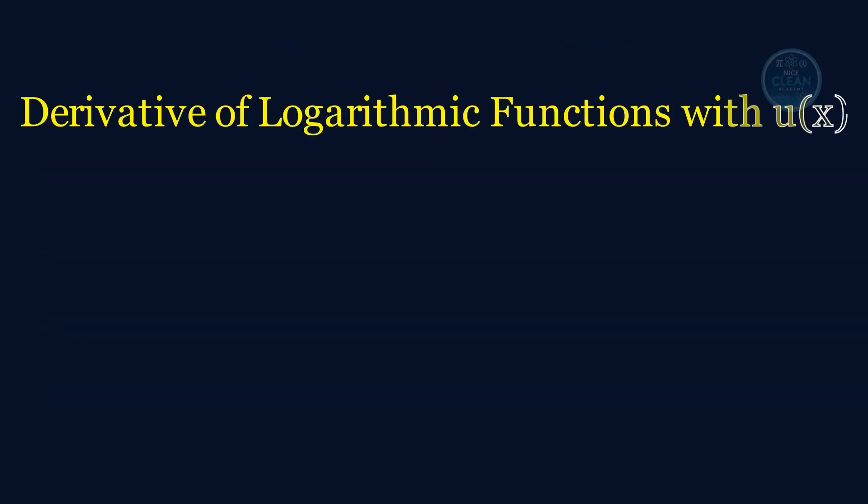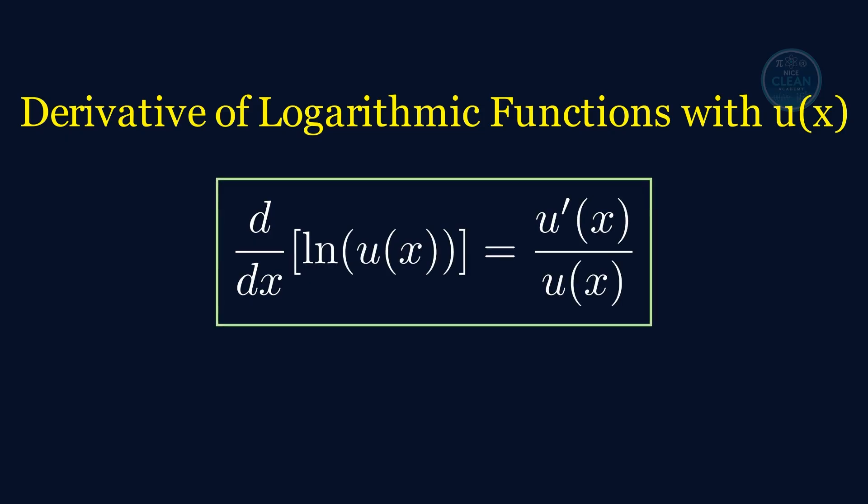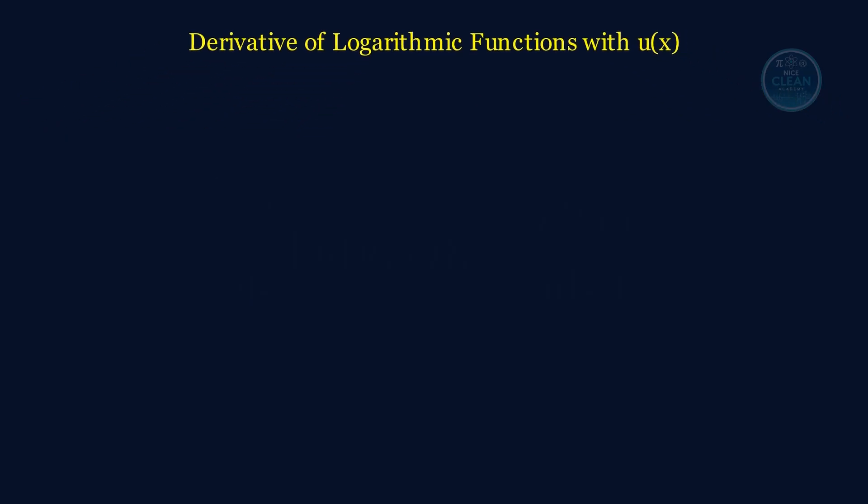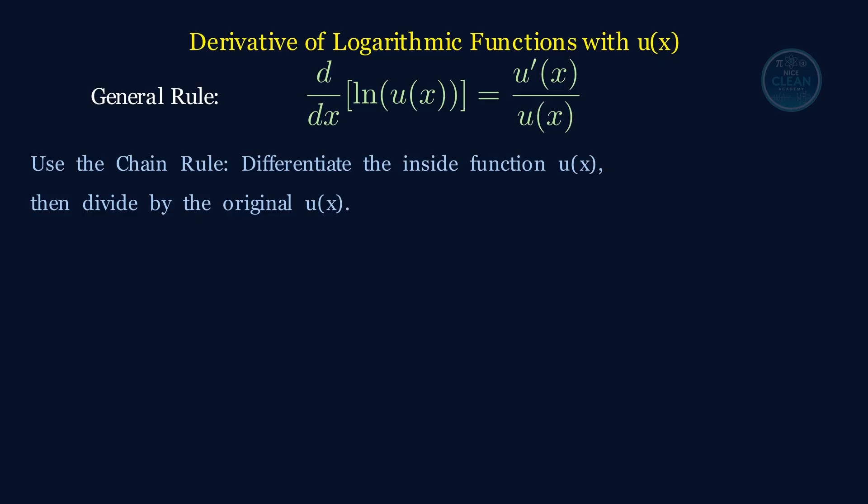Let's say we've got the natural logarithm of u of x. That's the natural logarithm of a whole function. This is where the chain rule comes in. The general rule says the derivative of the natural logarithm of u of x is u prime of x divided by u of x.